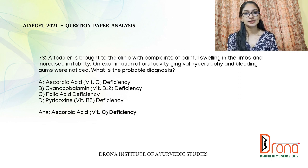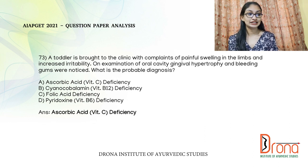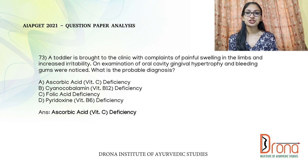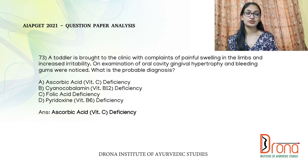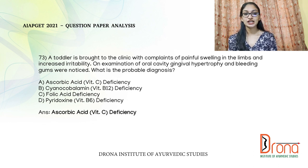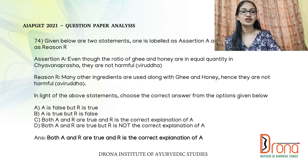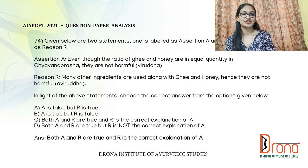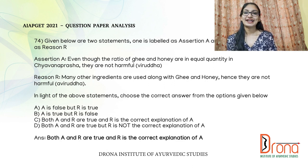The next question: a toddler is brought to the clinic with complaints of painful swellings in the limbs and increased irritability. On examination of the oral cavity, gingival hypertrophy and bleeding gums were seen. What is the probable diagnosis? These symptoms are seen in Vitamin C, i.e., ascorbic acid deficiency (scurvy).